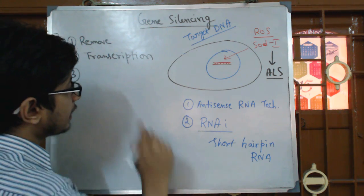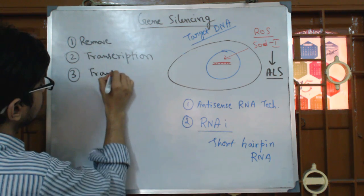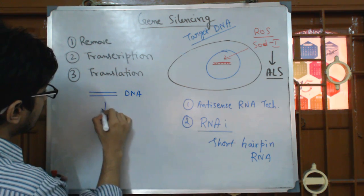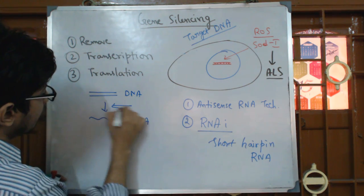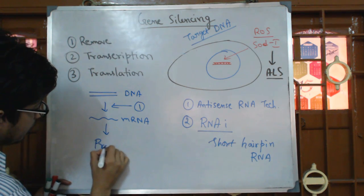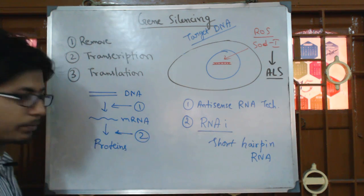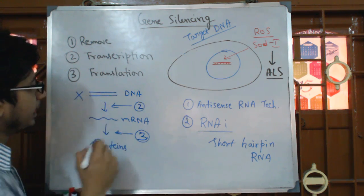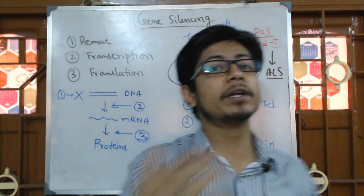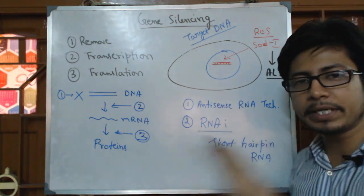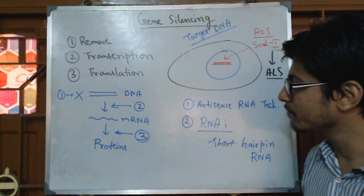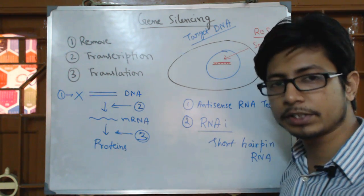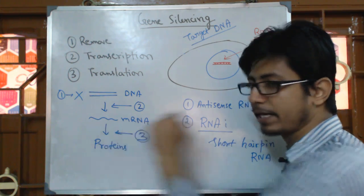The third type of regulation is prevention of expression at the translation level. According to the central dogma of biology, DNA makes mRNA — that is the first level where we can prevent expression — and mRNA makes proteins, which is the second level. So there are three ways to silence a gene: completely remove the DNA, prevent expression at the time of transcription, or prevent expression at the time of translation by targeting the mRNA.